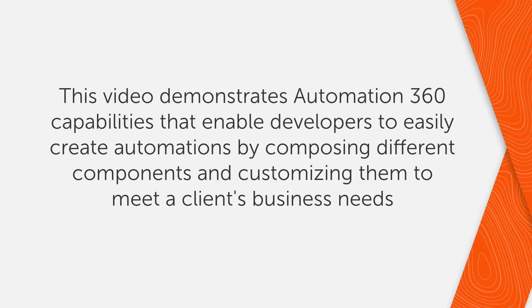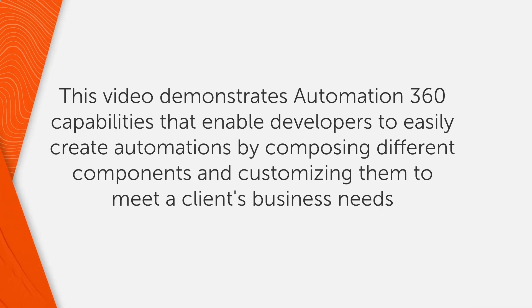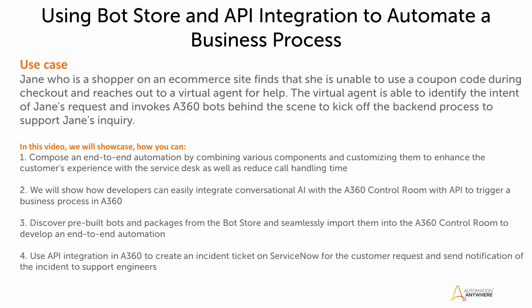In this demo, we will cover a number of core capabilities of the Automation 360 platform that allow developers to easily put together automation by composing different components and customizing them to meet a client's business needs. The business scenario is the following: call centers today are trying to reduce the average handling time for call volumes by enabling virtual agents to do more by integrating them with multiple systems in the backend with RPA or API, which can then automate tasks and resolve customer requests quickly and efficiently.